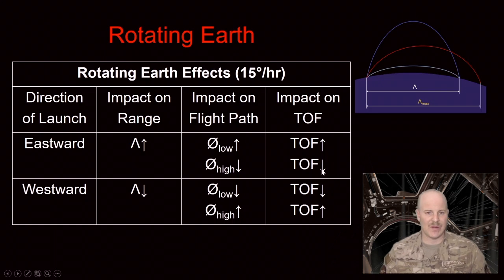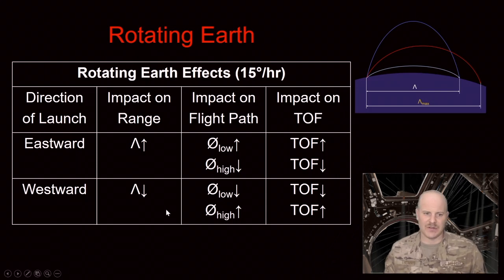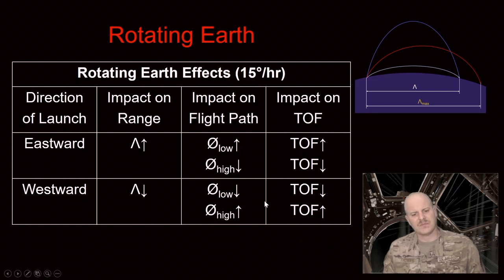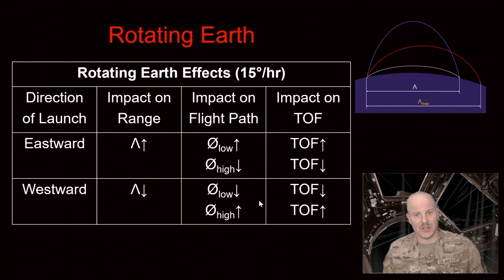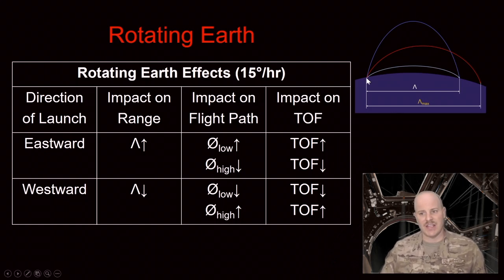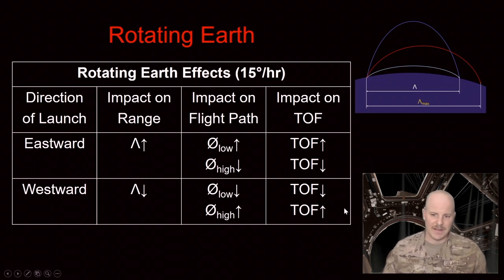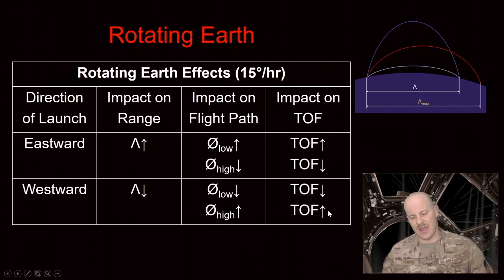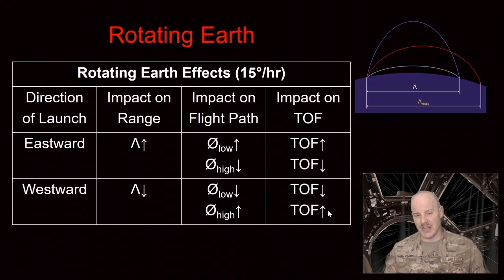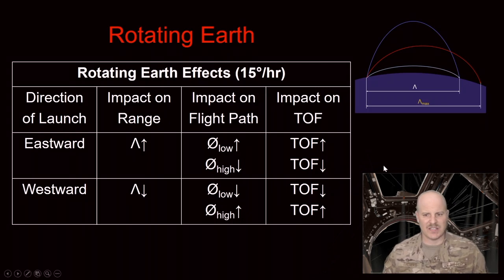If launching westward, things are almost exactly opposite. Range will actually decrease because the Earth is moving towards the target as I'm launching. For flight path angle, the low trajectory needs to decrease because I'm hitting a target that's closer than a non-rotating Earth would suggest. If taking the high path, I go a little higher to achieve that point. For time of flight, the low path time of flight goes down, and the high path time of flight goes up. Make sure you're familiar with these effects of a rotating Earth on trajectories, as this is the kind of question you might see on a GR.